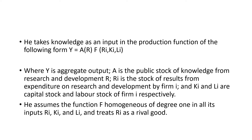What are the assumptions with respect to Romer's model? Romer has assumed that the production function F is homogeneous of degree 1, with respect to all inputs — whether capital, labor, or research. The production function is homogeneous and of degree 1. He also assumed that R_i, the stock of results from expenditure on research and development, is a rival good — it is not a public good, it is a rival good.